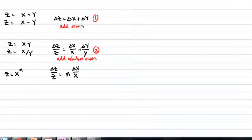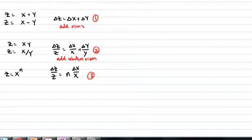The third equation we were given is: if there is a power relationship between the value z and a measurement of x, when there's some uncertainty in x, then the relative uncertainty in z is just going to be equal to the power times the relative uncertainty in x. So I want to talk about how all three of these error formulas come about.